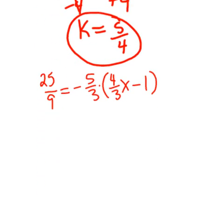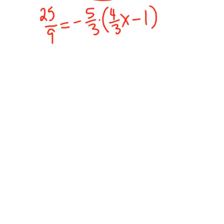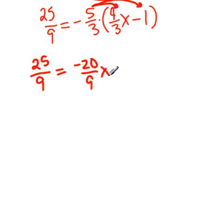And next. Solving with fractions. Now, there's a couple of ways that we can work this. It may be best to go ahead and distribute first. That way, we then can clear all fractions. So, I'm going to have 25 over 9 equals. This is negative 5 over 3 times 4 over 3. So, multiply the top two numbers and the bottom two numbers. And then negative 5 thirds times a negative 1 is positive 5 thirds.